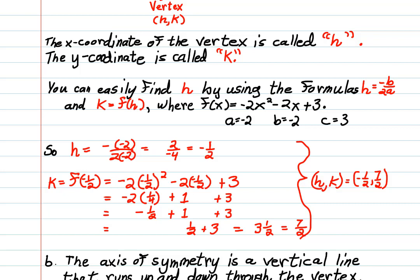Now we can easily find out what h is because it has a great little formula: h equals negative b over 2a. Our f(x) is negative 2x squared minus 2x plus 3, where a is negative 2, b is negative 2, and c is 3. So h is going to be negative b, which is negative negative 2, over 2 times negative 2, which gives us 2 over negative 4, which gives us negative 1 half.